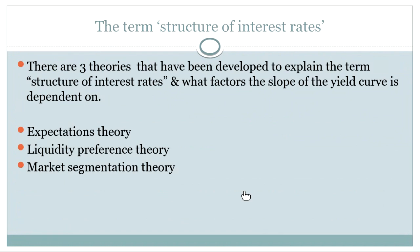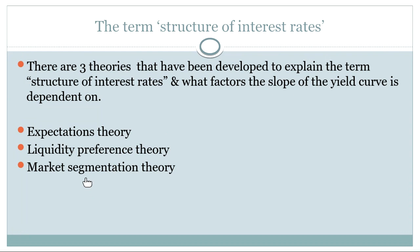Various economists have researched and written papers attempting to explain why the yield curve behaves in that manner. There are three different theories that you have to study and can be questioned on: the expectations theory, the liquidity preference theory, and the market segmentation theory. These are just three different ways of looking at the yield curve and explaining why they behave like that.